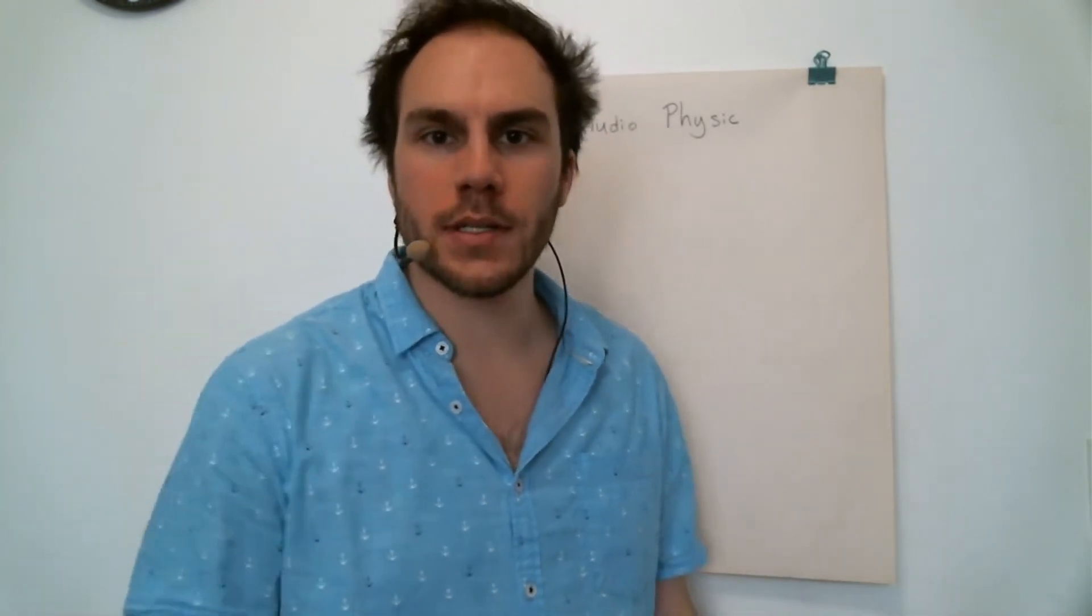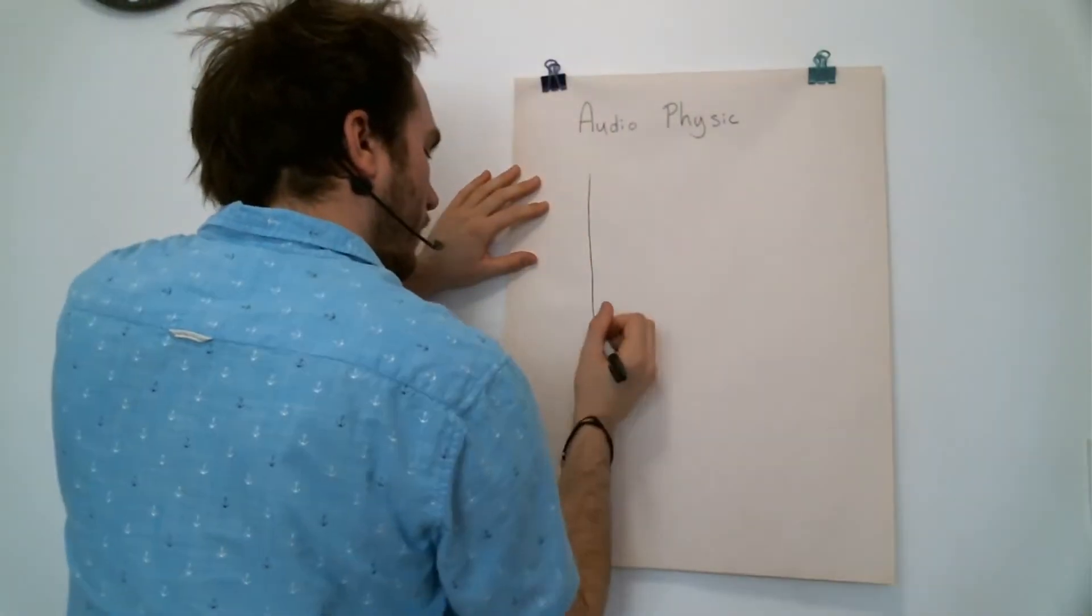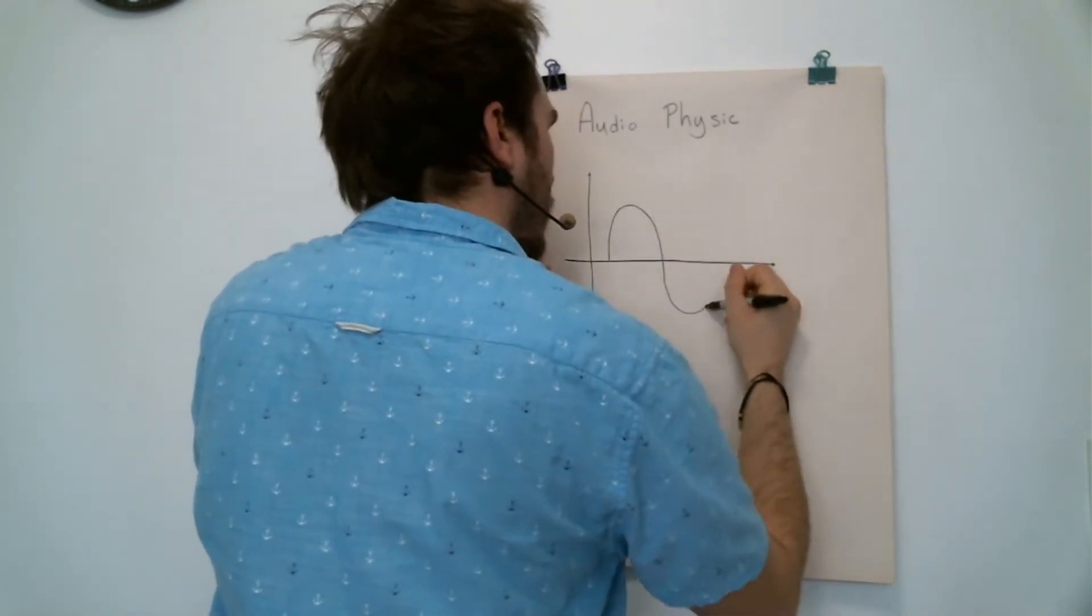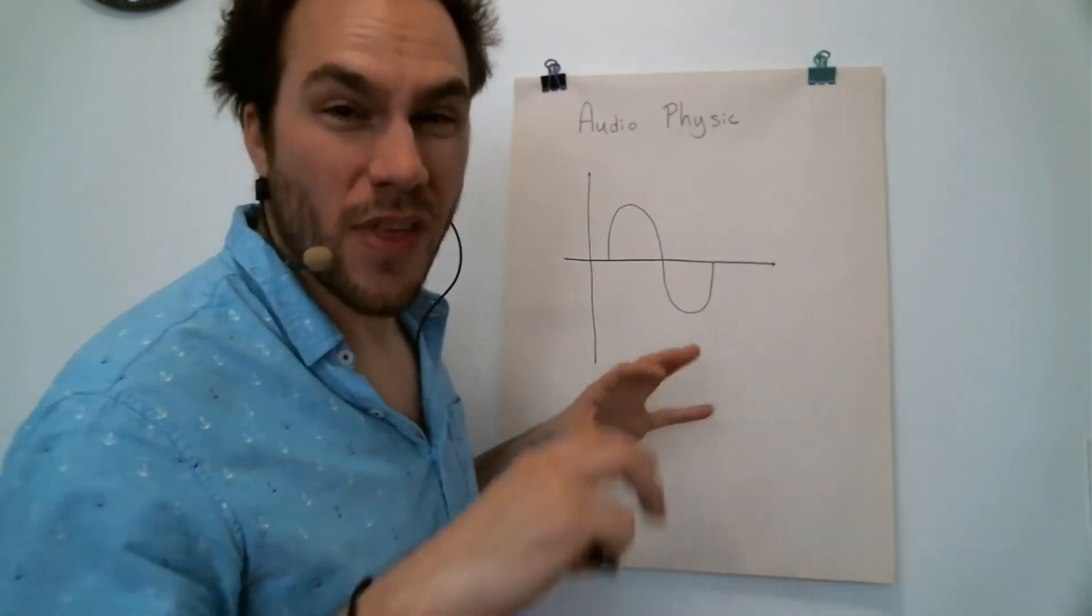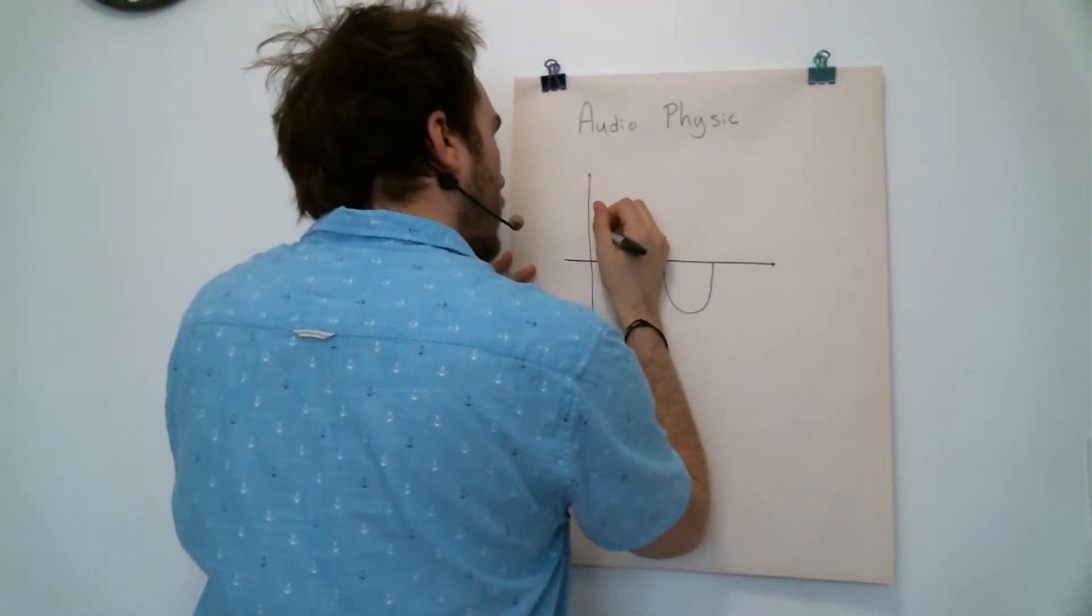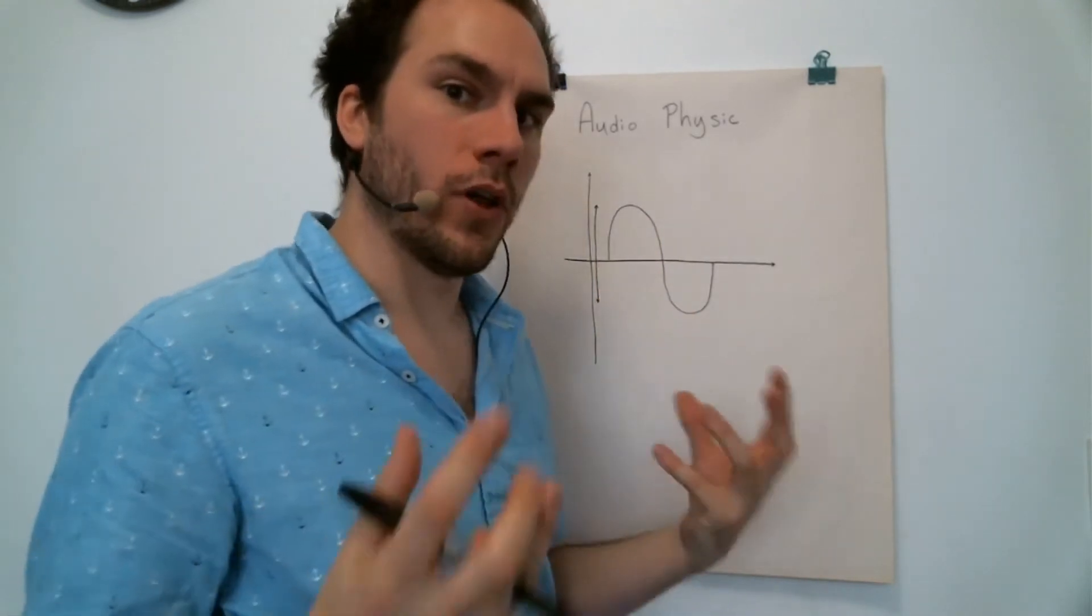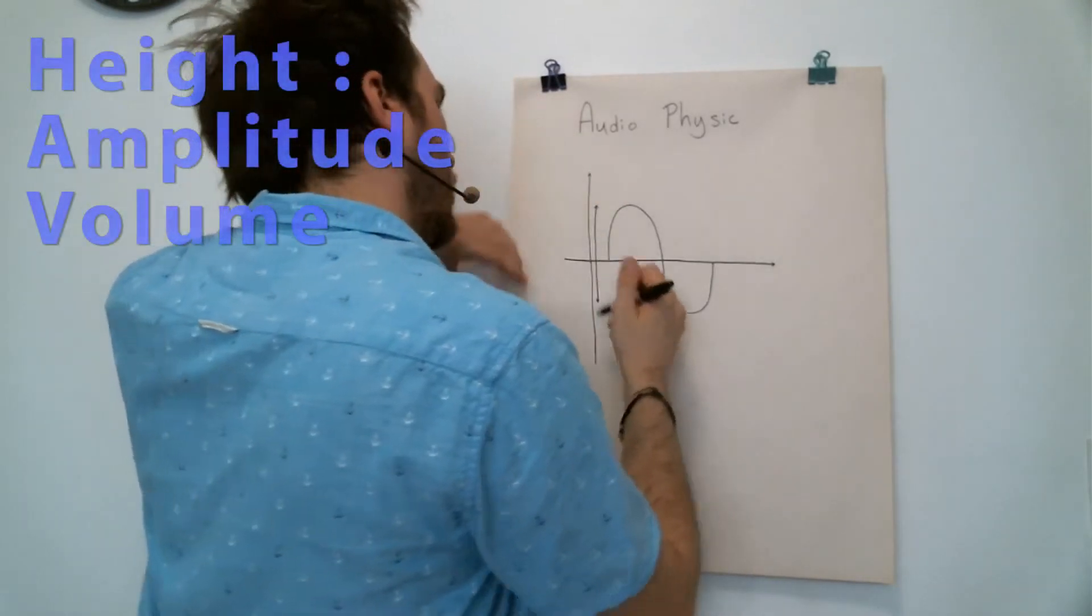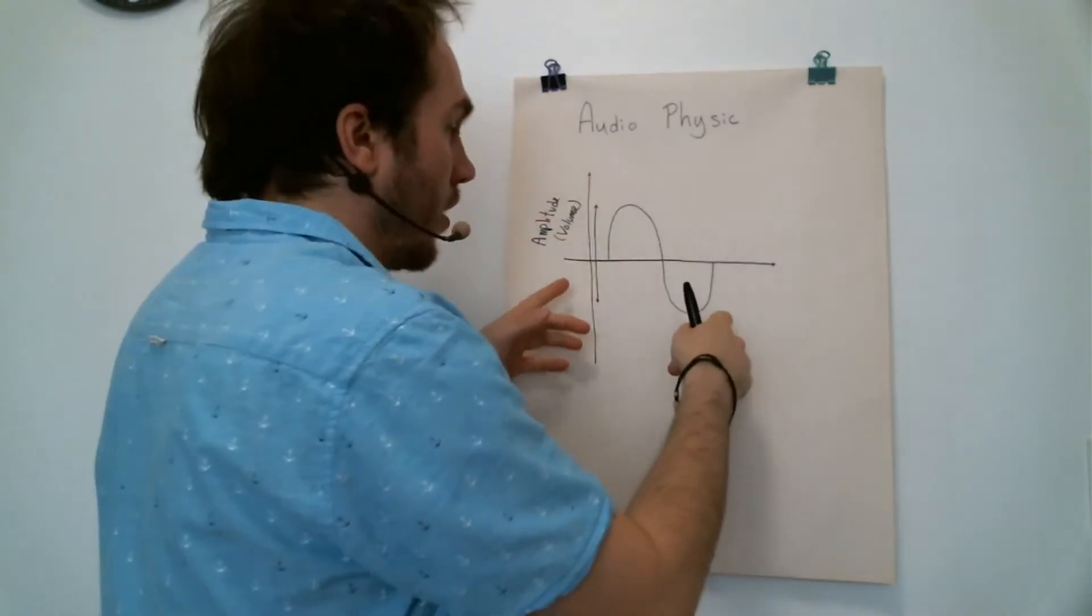Audio is a wavelength. Let's analyze this perfect sine wave. The height of the wave is called amplitude, also known as the volume. So this is the volume of the signal.